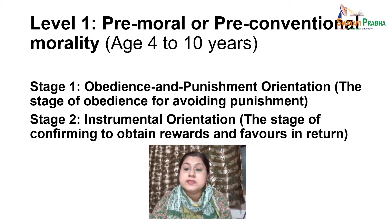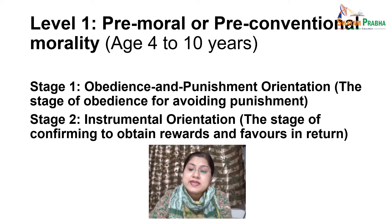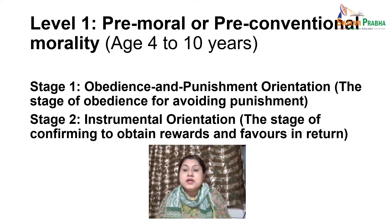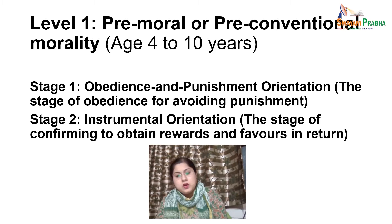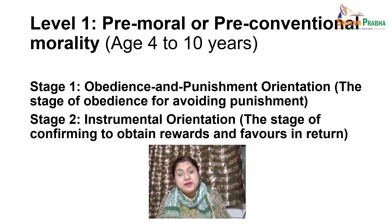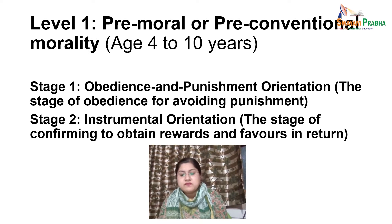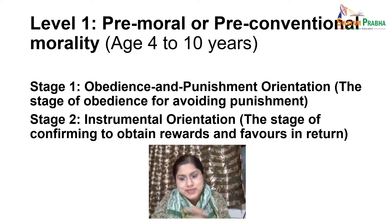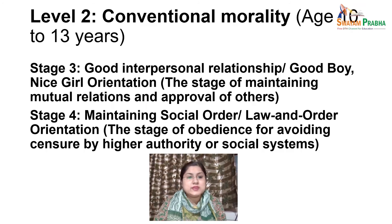Stage 2 is instrumental orientation. Right behavior is defined by whatever the individual believes to be in their best interest. Stage 2 reasoning shows a limited interest in the needs of others, only to the point where it might further the individual's own interest. Concern for others is not based on loyalty or intrinsic respect; rather, a give-and-take mentality dominates. For example, when a child is asked by the parents to do some work, the child asks what they will get in return, and the parent offers something of the child's liking as an incentive.